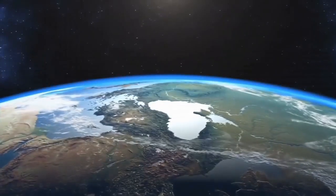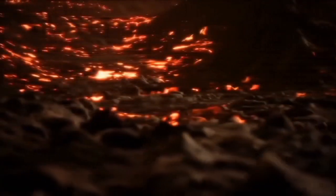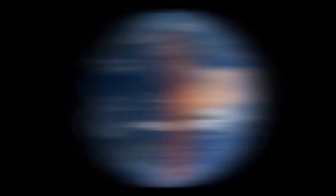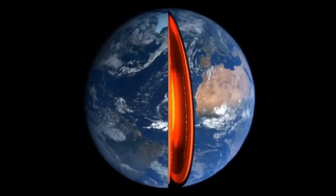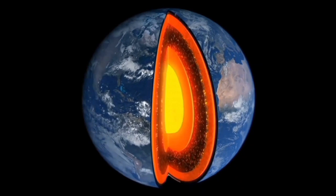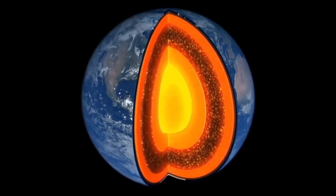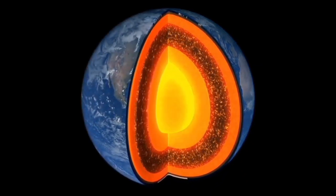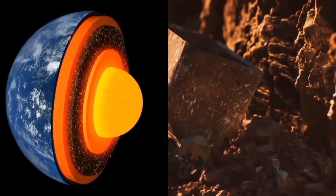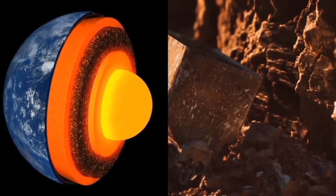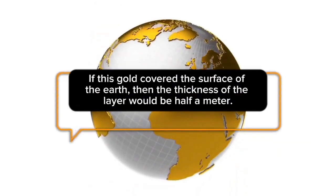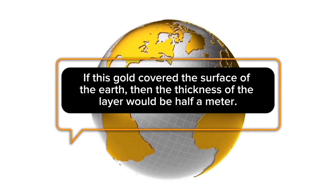Because the Earth was in a molten state after its formation, almost all the gold on Earth is in the core. Scientists say that the core of our planet contains five times more gold than all the reserves known to man. If this gold covered the surface of the Earth, the thickness of the layer would be half a meter.